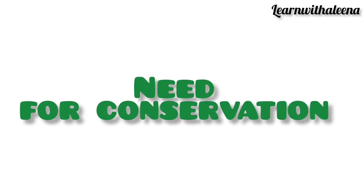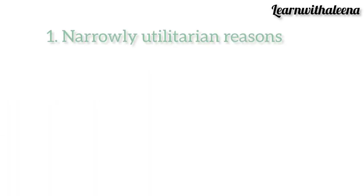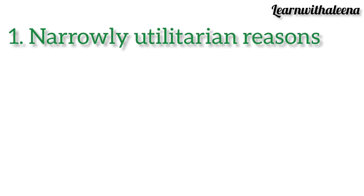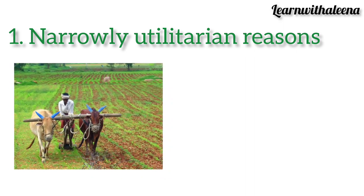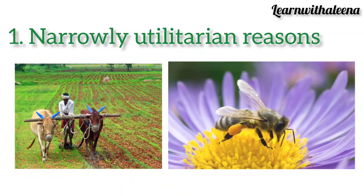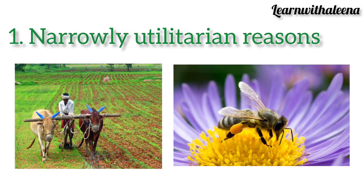The need for conservation can be categorized into four groups. The first is narrowly utilitarian reasons, which include direct economic benefits like food, firewood, fiber, industrial products, and products of medicinal importance. Farming is also dependent on biodiversity — it is vital for pollination. Flowering field margins, meadows, and hedgerows help wildlife survival.